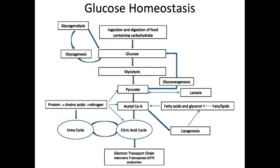This diagram illustrates the complex pathway involved in glucose homeostasis. ATP production is maintained by glycolysis, glycogenolysis, and amino acids.